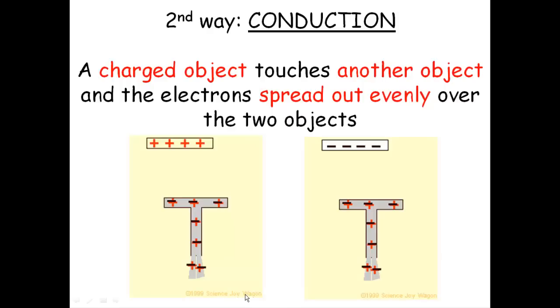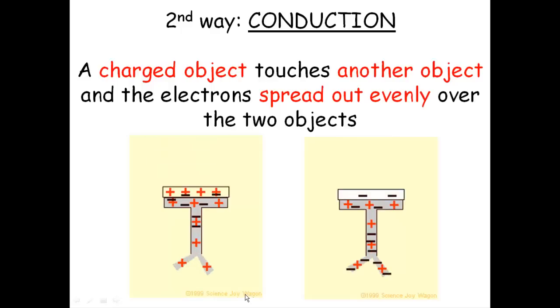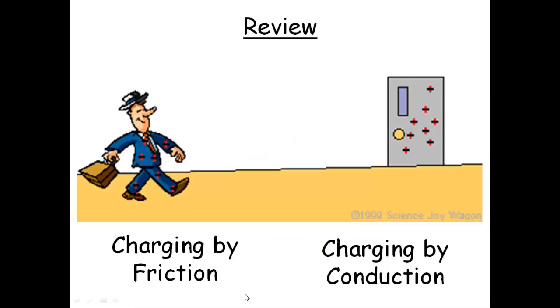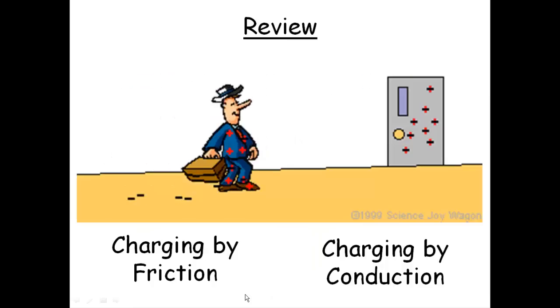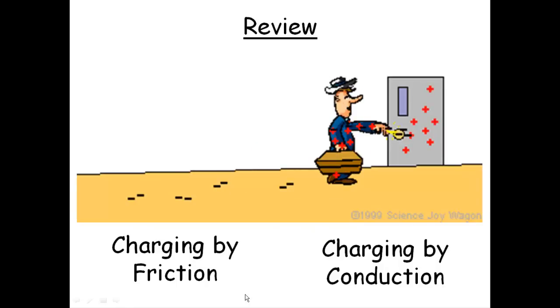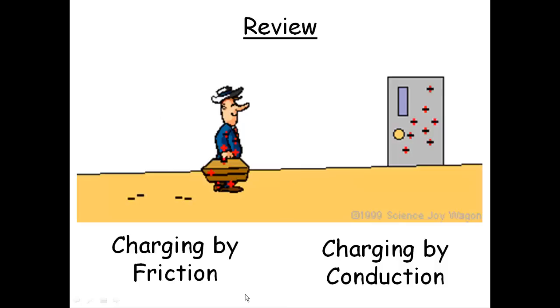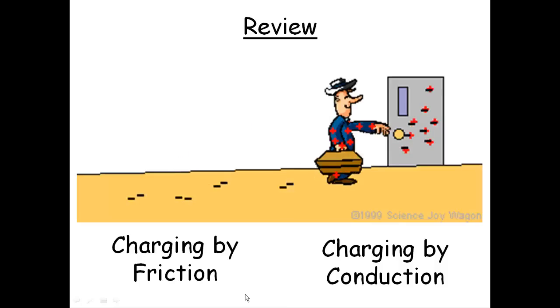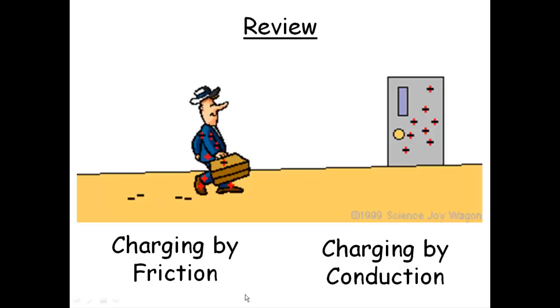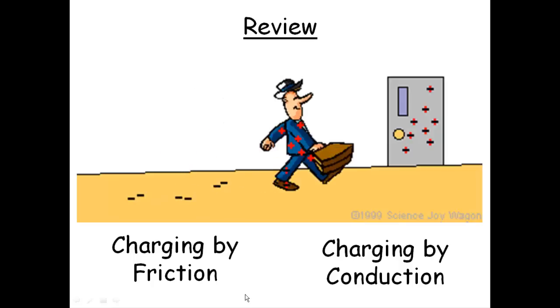The second way is conduction. It's kind of like friction, only there's no rubbing necessary. You just touch it. And the electrons either jump onto the object you're touching or off the object because they're trying to get away. In this example you're all familiar with, the guy's walking across the floor. He touches the doorknob and gets zapped. As he walks across the floor, he's charging by friction. And when he touches, remember he didn't rub the doorknob, he just touched it and charged by conduction.